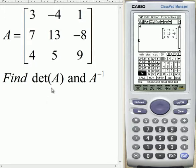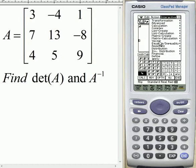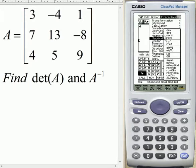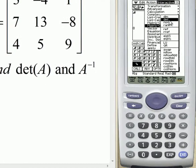Now to find the determinant, I just look along this top tab here where it says Edit Action Interactive. I click Interactive, I then select Matrix Calculation and the DET button, Determinant.